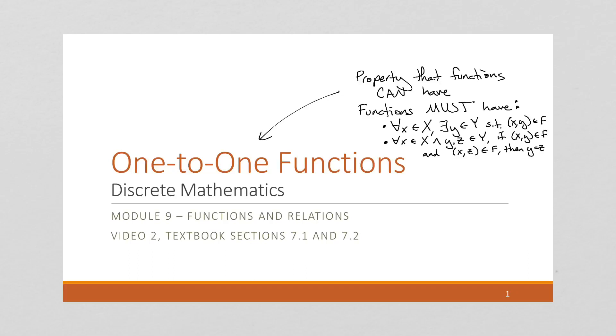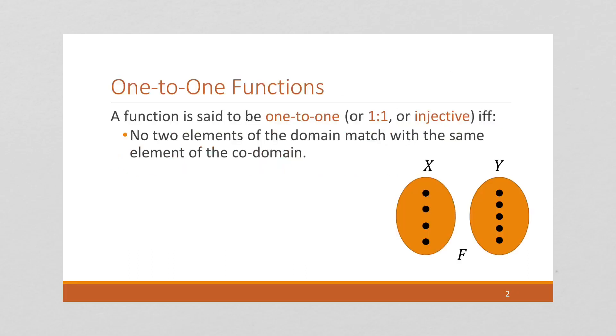One-to-one is a property that functions can have. Some functions have it, some don't. Let's look at it. So a function is one-to-one, which is also sometimes written in shorthand. It's also called injective, though I don't tend to use that term as much. I usually say one-to-one.